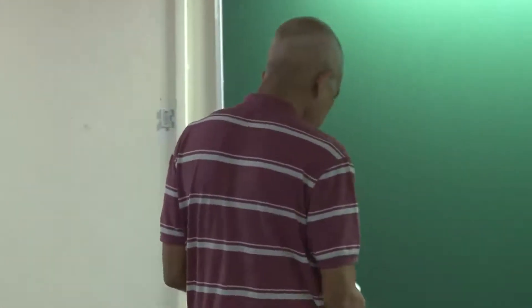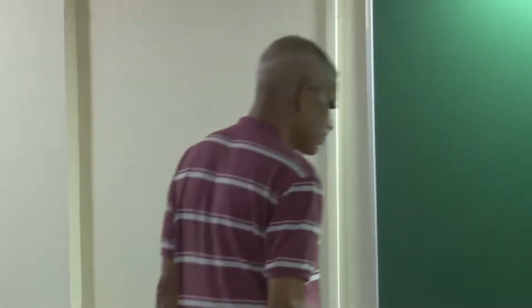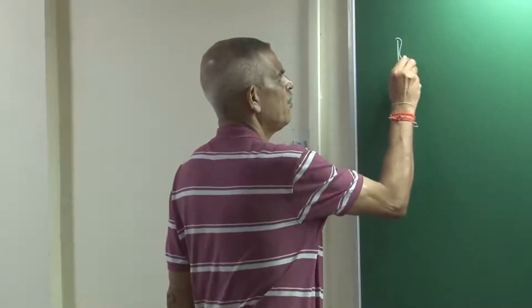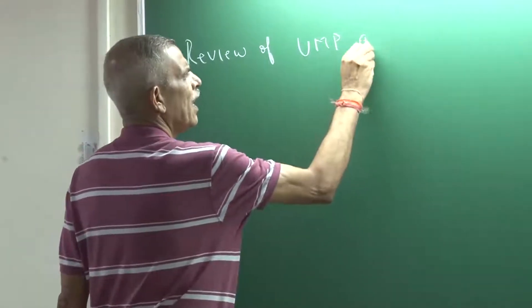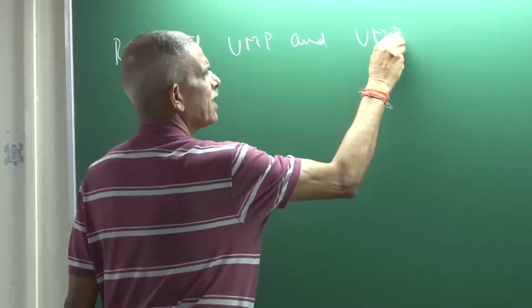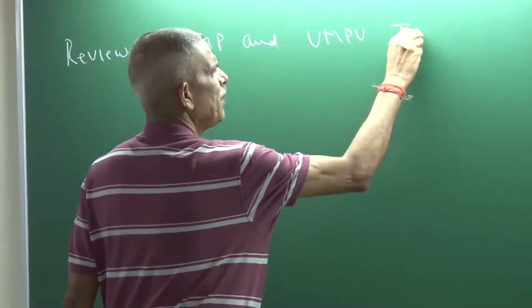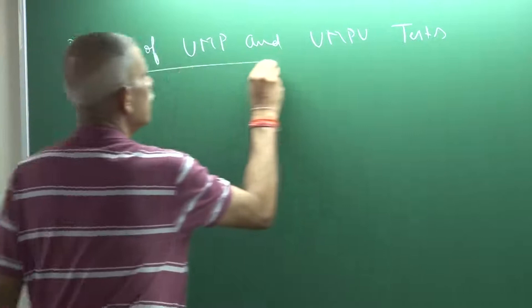Another restriction could be invariance, especially when the testing problem at hand has a nice structure — that is, it is invariant. Before going to invariant testing, let me review the concepts from the last course dealing with Uniformly Most Powerful (UMP) and Uniformly Most Powerful Unbiased (UMPU) tests.